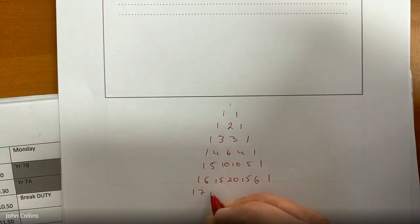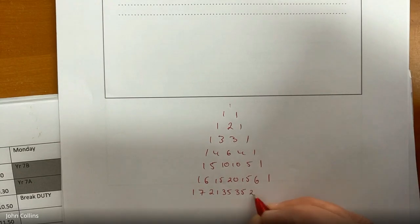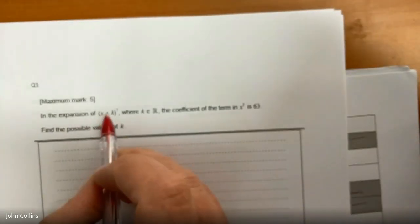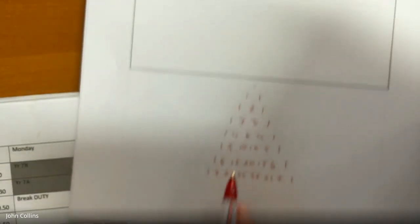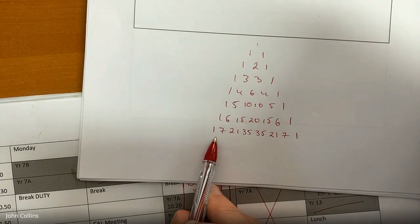One, seven, twenty-one. This is the important line: thirty-five, thirty-five, twenty-one, seven, one. Why is that the important line? Because I have an x to the power of seven here in the question. So x to the power of seven means you go to the seven line — the line with the seven in it. I think you may have gone to the sixth line.